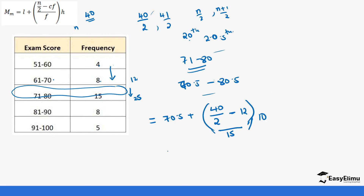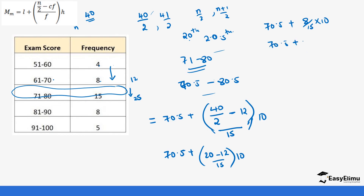Applying the formula: Median = 70.5 + [(40/2 − 12) / 15] × 10 = 70.5 + [(20 − 12) / 15] × 10 = 70.5 + [8/15] × 10. Now 8/15 ≈ 0.5333, multiplied by 10 gives 5.333, so the median is 70.5 + 5.333 ≈ 75.75. Notice this value falls within the median class 71 to 80, confirming our result.